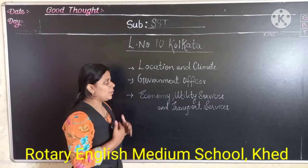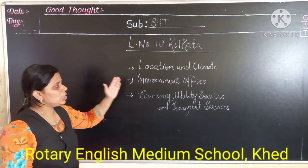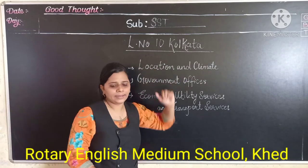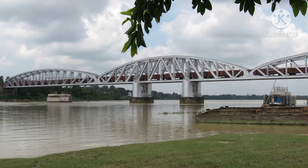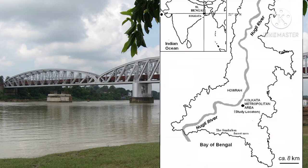Now we are going to discuss about the location and climate. Kolkata is located on the east bank of river Hugli in West Bengal. You can see here in the image where Kolkata is located.